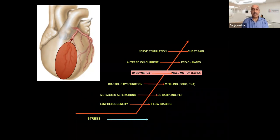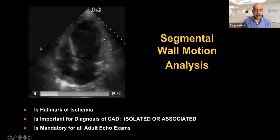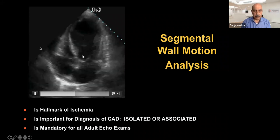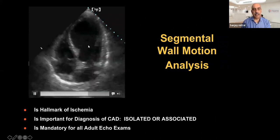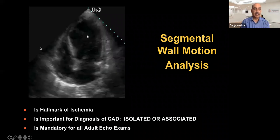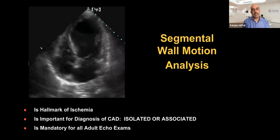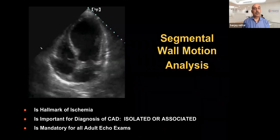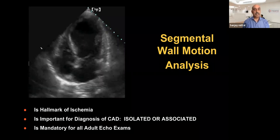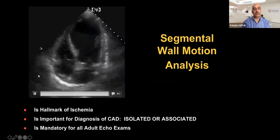As soon as dyssynergy or systolic dysfunction appears, it is easy to understand — and it appears much before pain or ECG changes — so sensitivity and specificity are higher. For example, the basal segments contracting well but the apical area hardly contracting, even moving away during systolic contraction compared to the rest of the walls — this is what we call segmental or regional wall motion abnormality, meaning the abnormality is limited to a particular region, not the complete left ventricle.